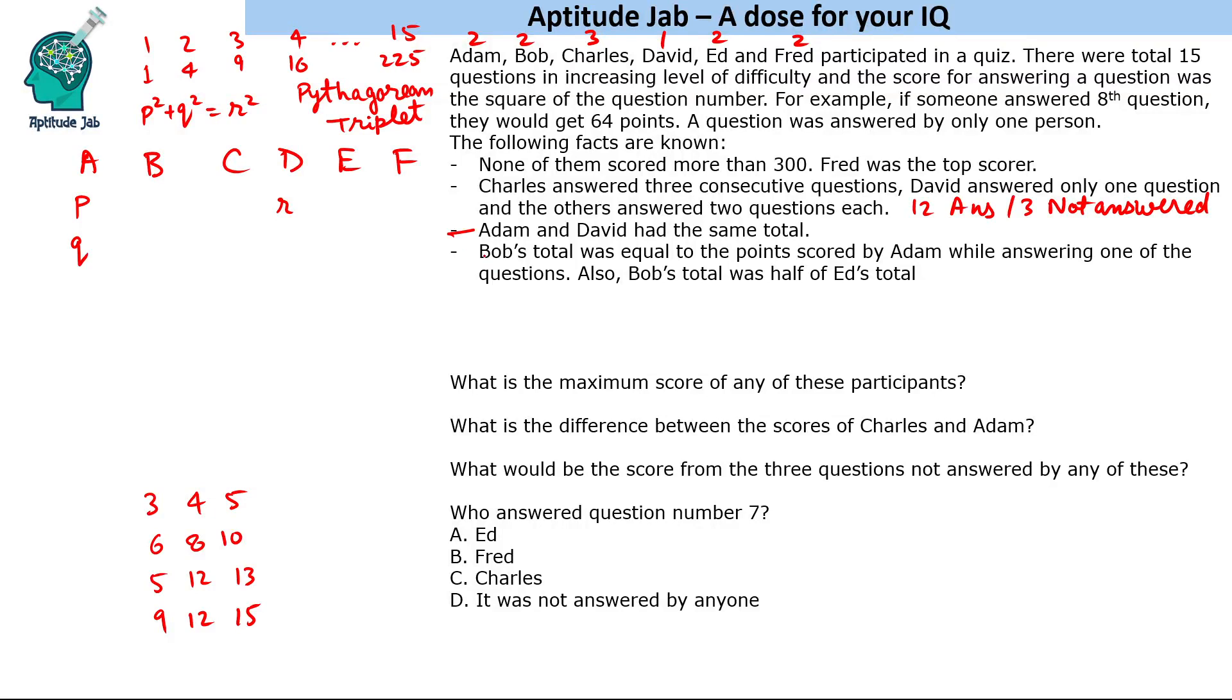Bob's total was equal to the points scored by Adam while answering one of the questions. Suppose Bob answered question numbers s and t. So s² + t² equals one of the values scored by Adam while answering one of the questions, let's say p.